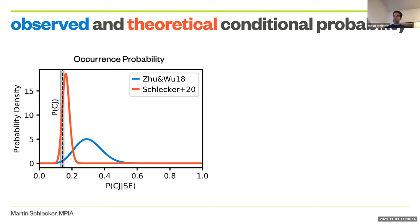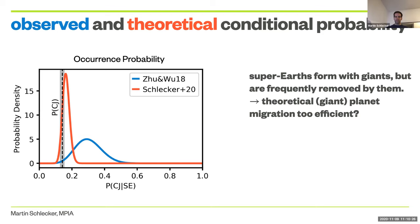In the model, in the simulation, we have the convenience of being able to turn back time, so to speak. We did that and saw that super-Earths do form in nearly all systems that host an outer giant. But then they're frequently removed by dynamically active warm Jupiters — giant planets that migrated to closer orbits and then threatened these inner systems of small mass planets. So our model actually seems to produce too many of these warm Jupiters.